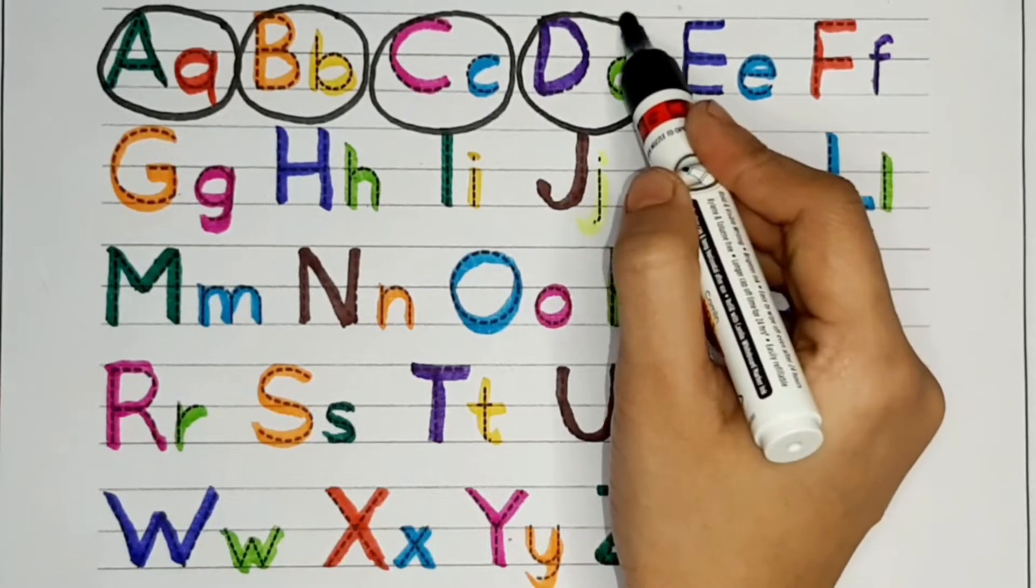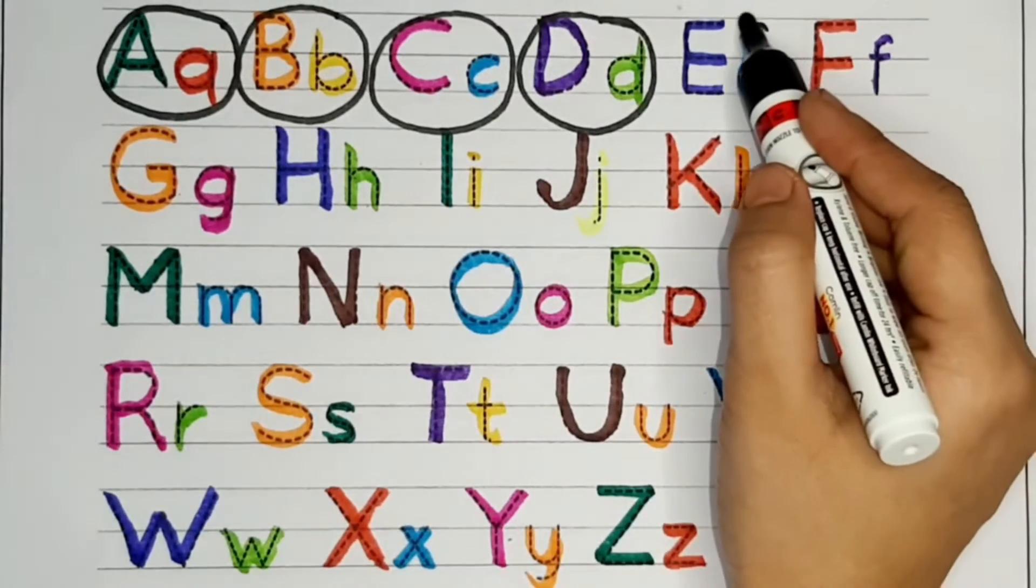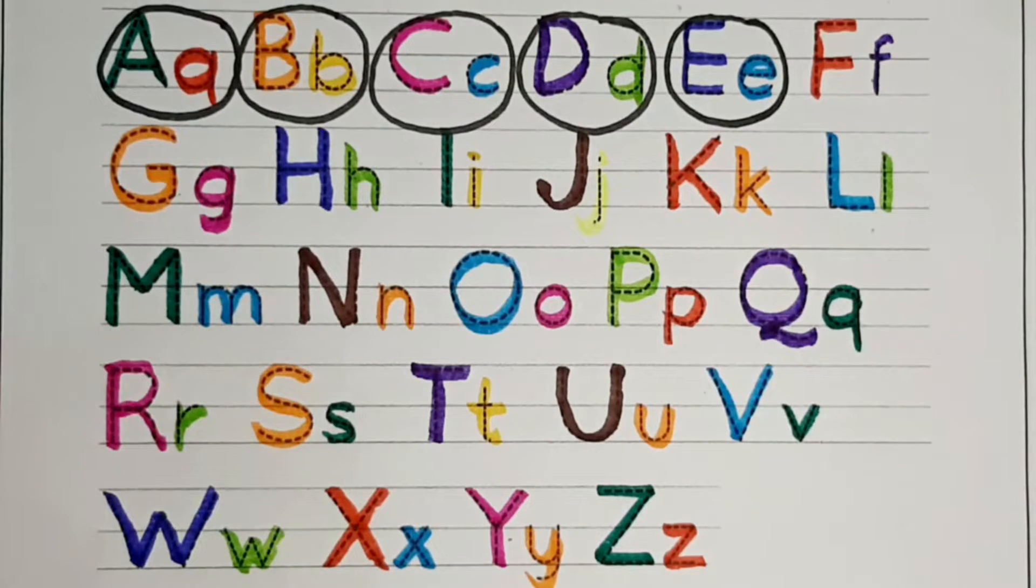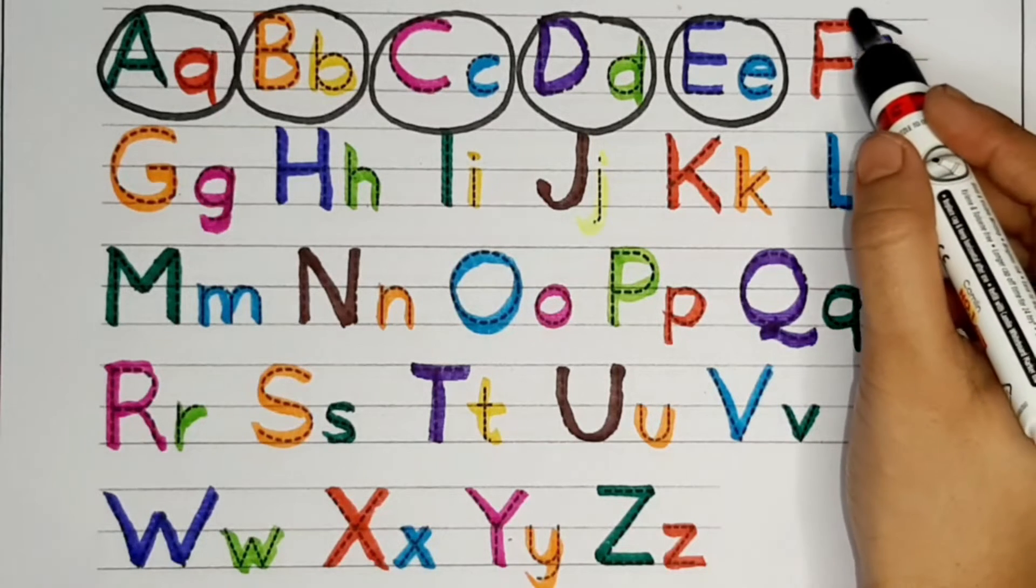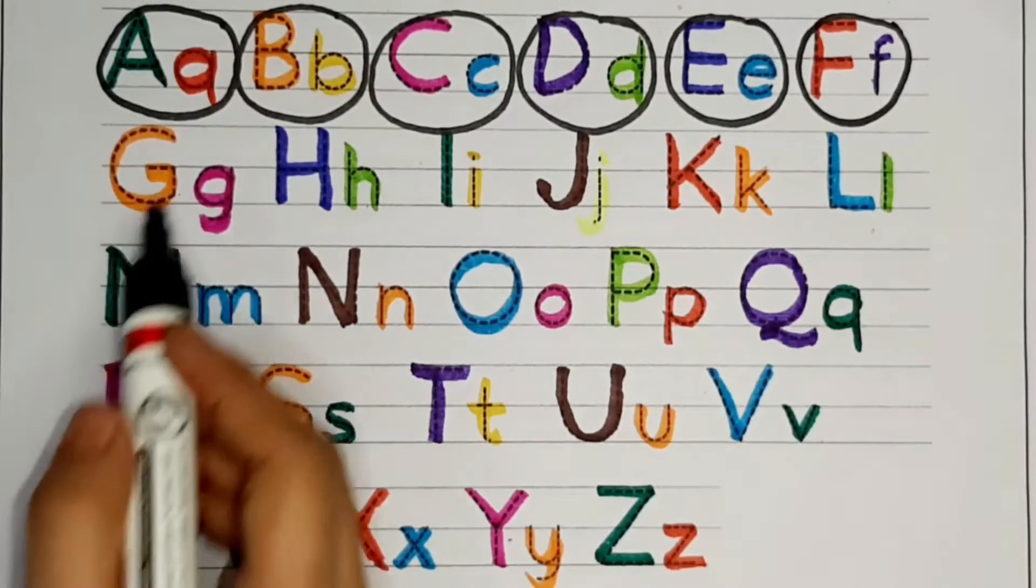D. D for dog, D for doll. E. E for elephant, E for egg. F. F for fish, F for flower.